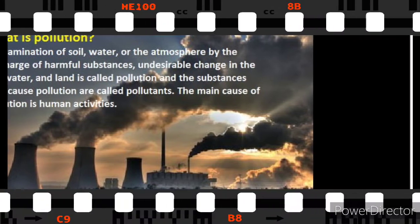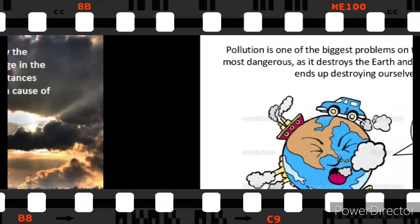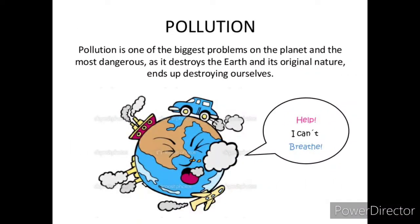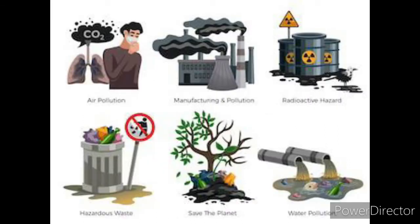Now children, look at this earth. Our earth is actually feeling suffocated — we can't breathe. Can we help it breathe? Yes, we can! Now let's talk about different types of pollution. They are air, water, noise, and land pollution.